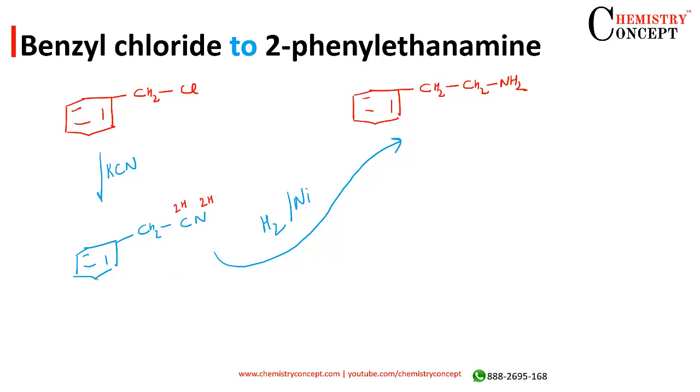That's it. Okay, what is the name of the product, the intermediate? It is 2-phenyl ethane nitrile. Done. Which on reduction gives 2-phenylethanamine.